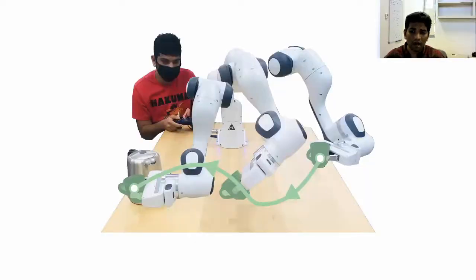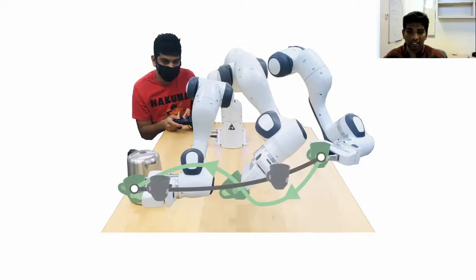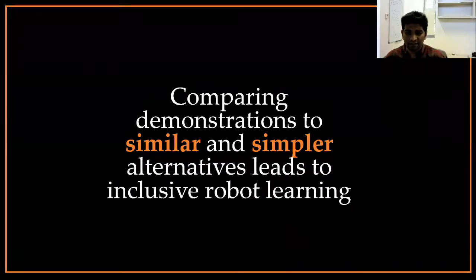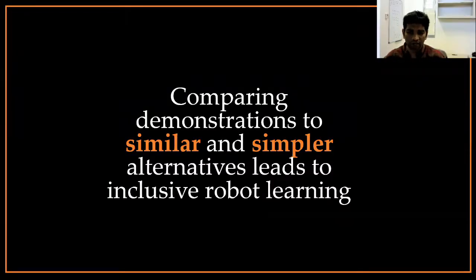So when a user shows the robot a non-ideal demonstration like the one here in green, instead of comparing it to the ideal demonstration like the one in gray, it should compare it to an alternative similar to the one here in orange. Our key insight is that for a robot to be an inclusive learner, it needs to underestimate the human's choice set. And we found that a robot that compares the human's demonstrations to similar and simpler alternatives can underestimate the human's choice set.